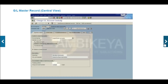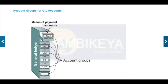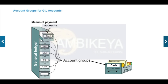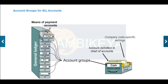The central view of the GL master records shows the chart of accounts data and the company code-specific data. Account groups are used to organize and manage a large number of GL accounts. Whenever a new GL account is created, an account group must be specified. Accounts with the same account group normally have similar business functions — for example, cash accounts, expense accounts, revenue accounts, and other balance sheet accounts. Account groups are assigned number ranges, which control which account numbers are permissible. Account groups also control the appearance of the company code segment of GL accounts — specifically, the fields required for data entry, optional fields, and fields that do not appear at all.